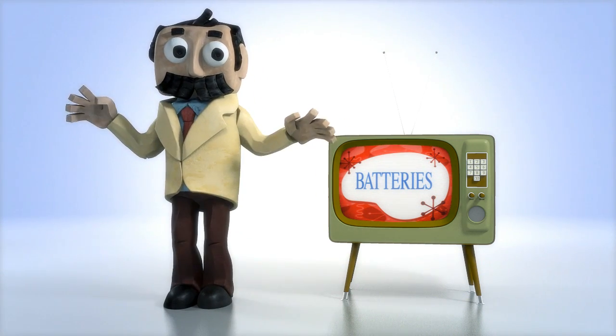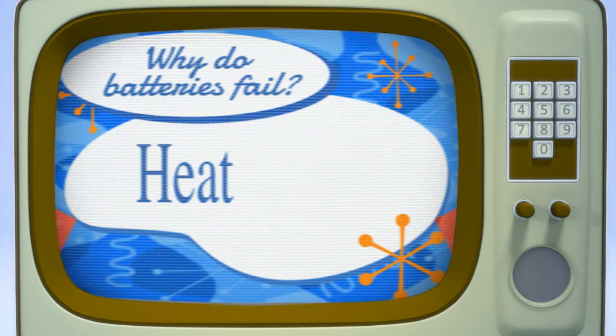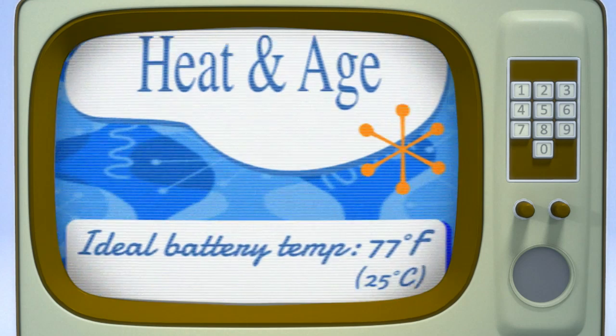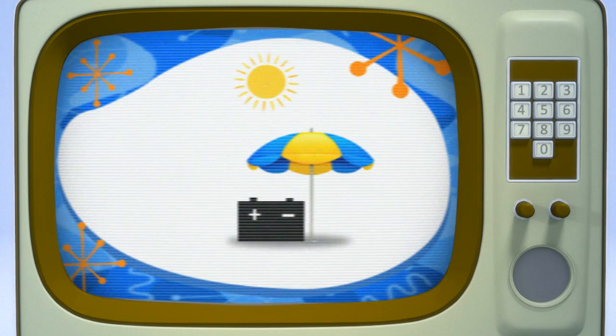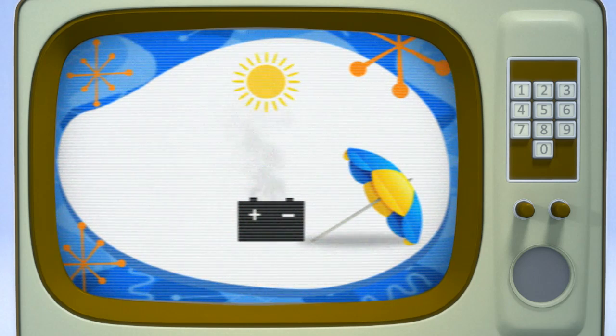So, why do batteries fail? Heat and age are the primary factors. Batteries like to be kept at 77 degrees. Any warmer and battery life will be greatly reduced. Keep your UPS in a temperature-controlled environment. If it's too hot for you, it's probably too hot for your batteries.